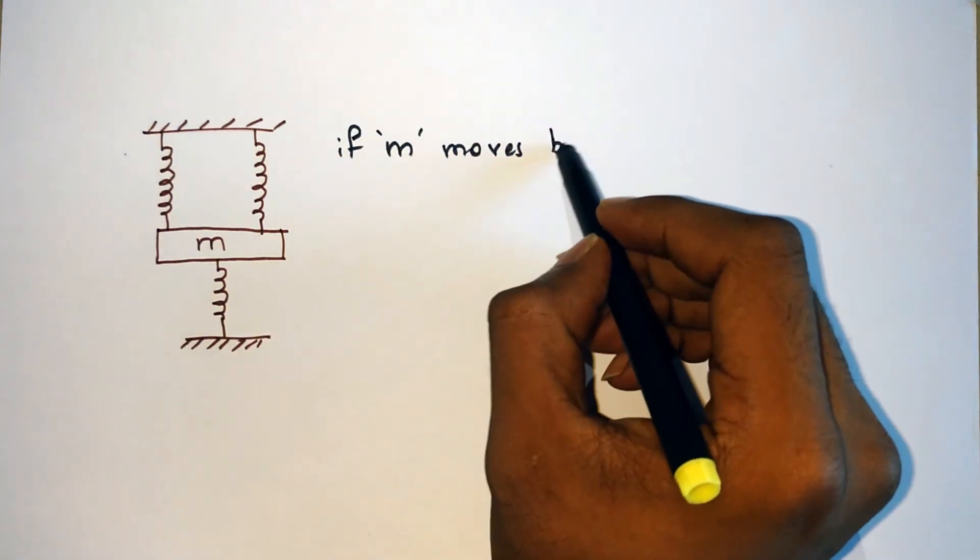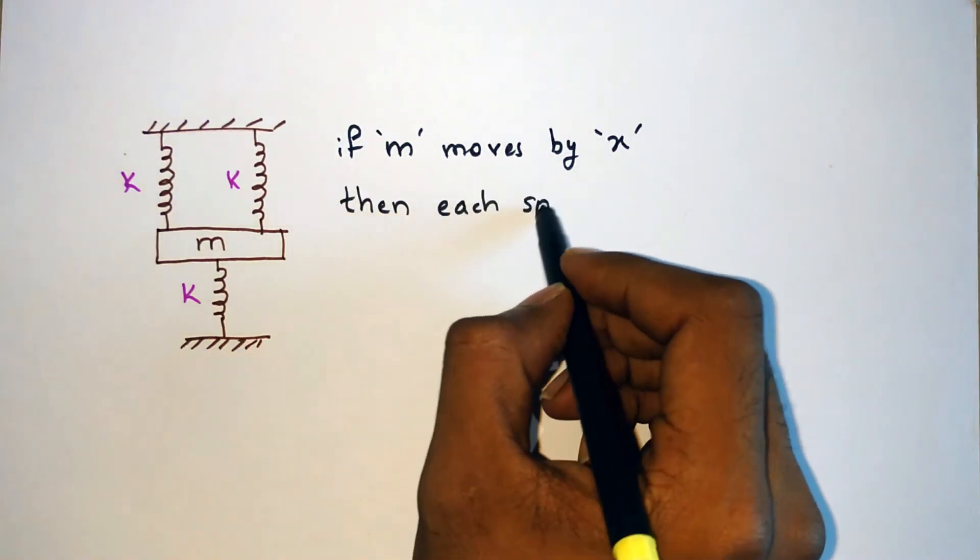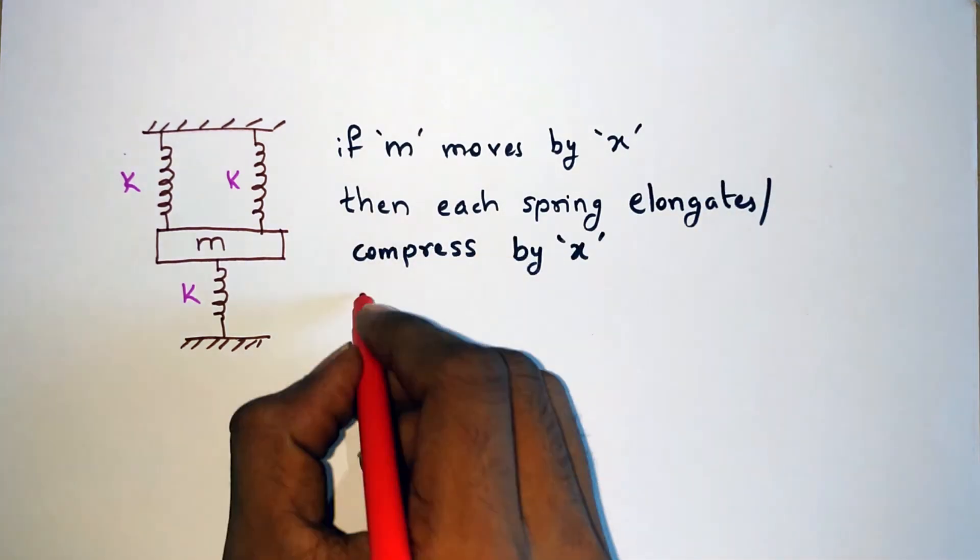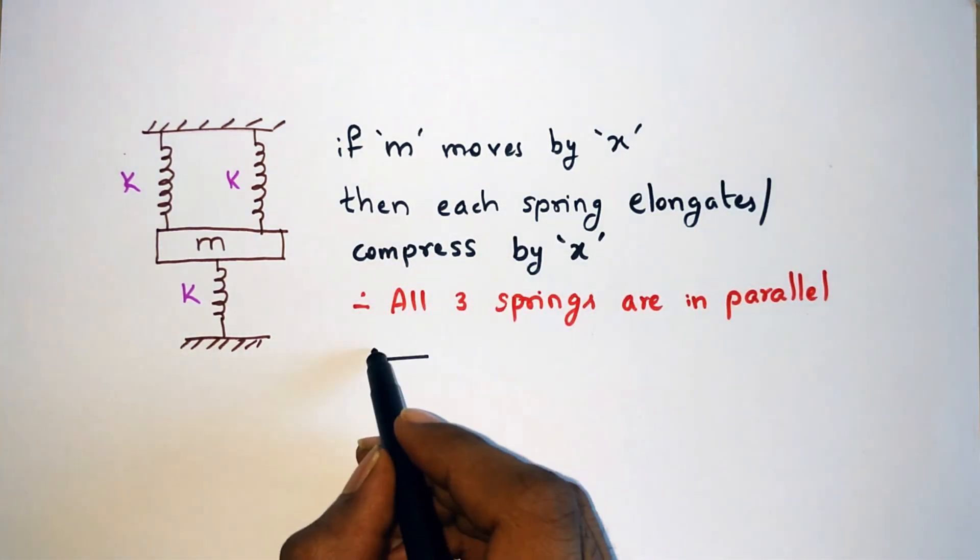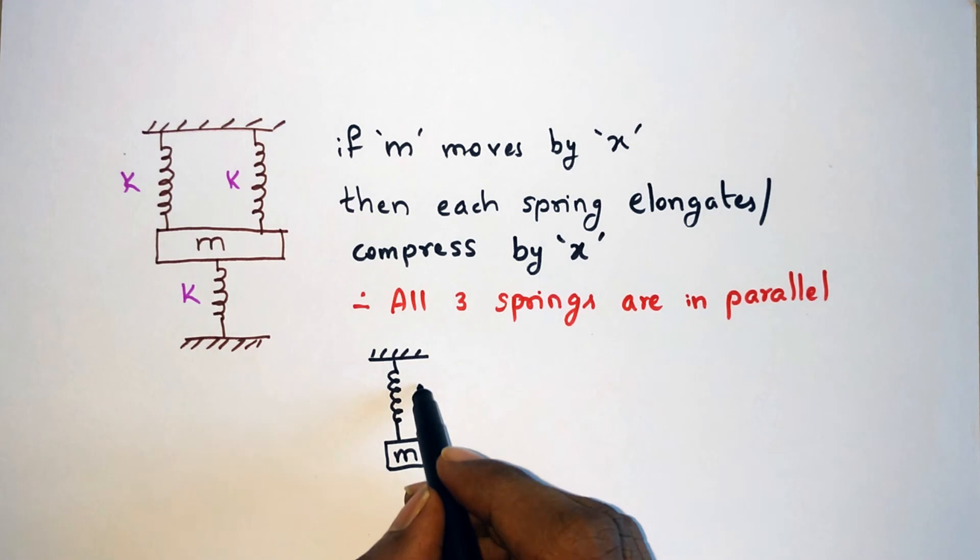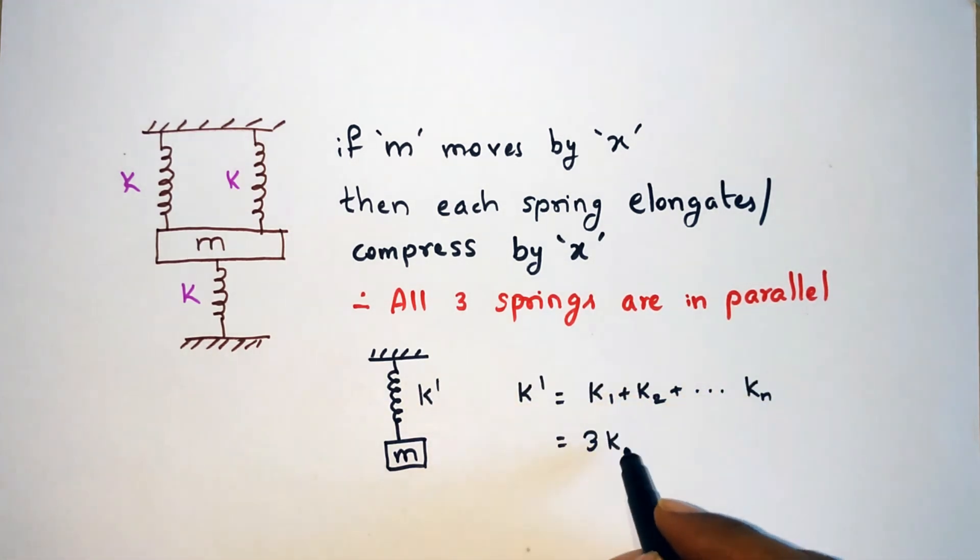Because if the mass M moves by distance x, then all three springs have to undergo elongation or compression of x. So the equivalent spring constant k' is equal to the sum of all the spring constants, which is 3k.